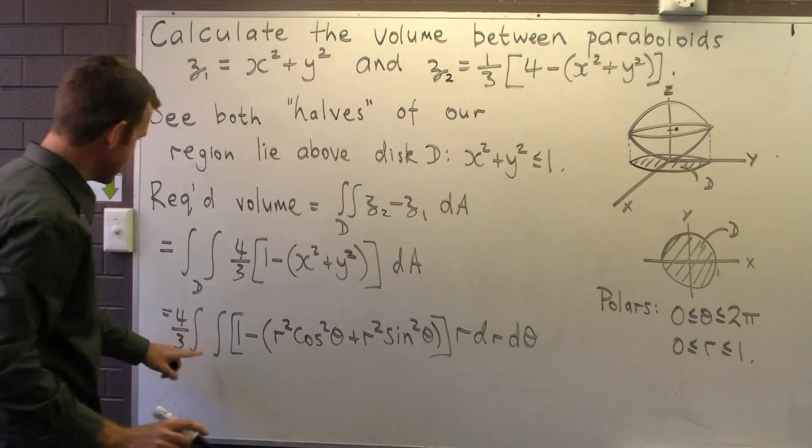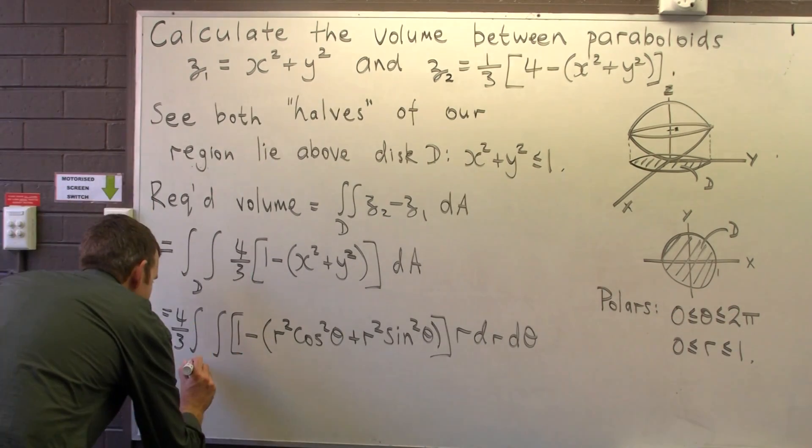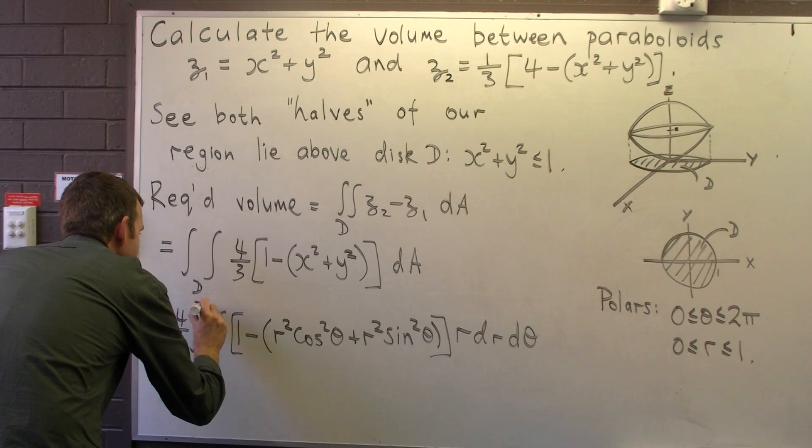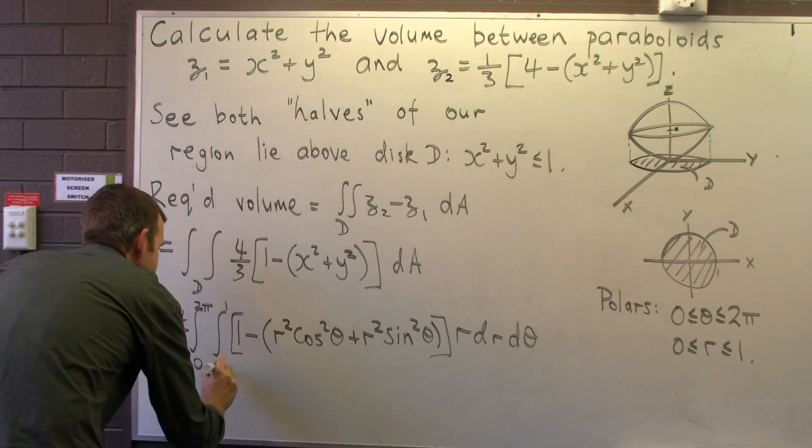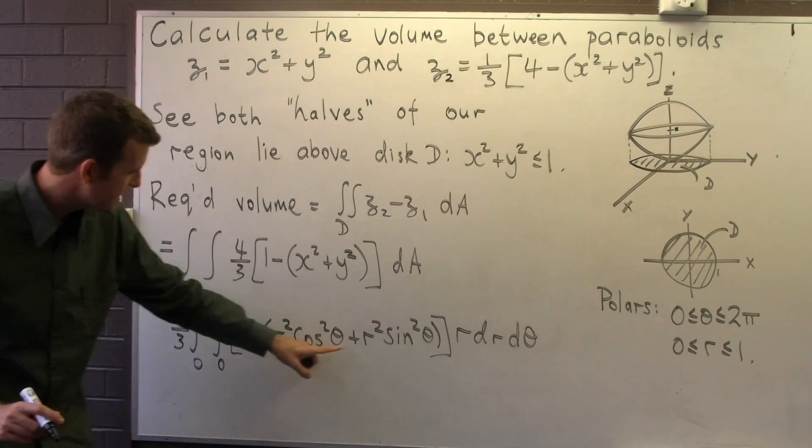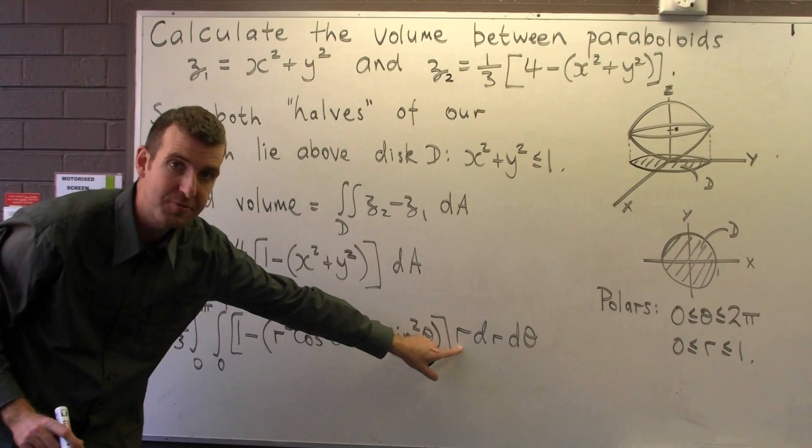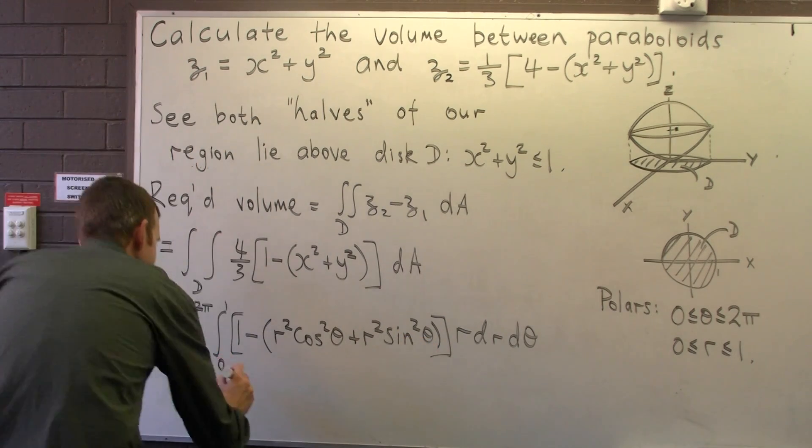r dr dθ. Now what about these limits of integration? Well they come from here. 0 to 2π and 0 to 1. Alright, so here we're going to have just r squared and if we incorporate this multiplication by r we get the following.